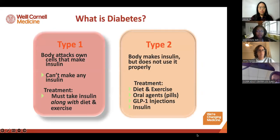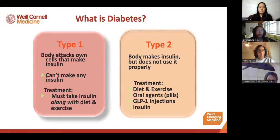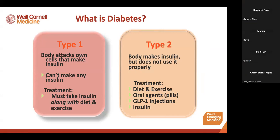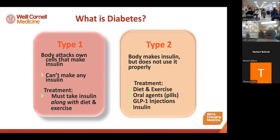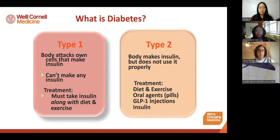There are different forms of diabetes mellitus. The two main forms are type 1 and type 2. Type 1 diabetes is a condition where our body attacks the cells in the pancreas that make insulin, so the pancreas cannot make any insulin. People with type 1 diabetes require insulin at all times. They also benefit from healthy eating and physical activity, but by and large they require insulin because the pancreas cannot make it at all.